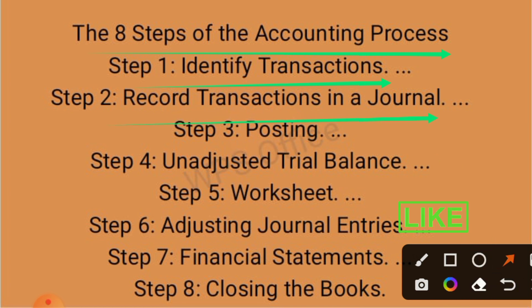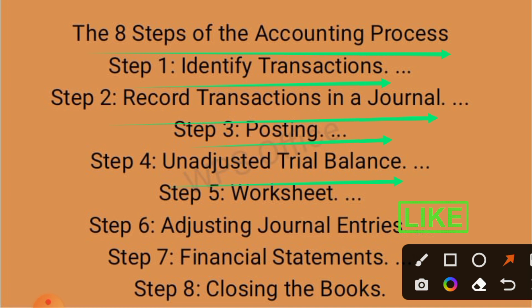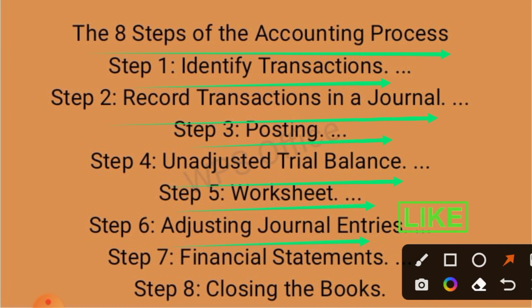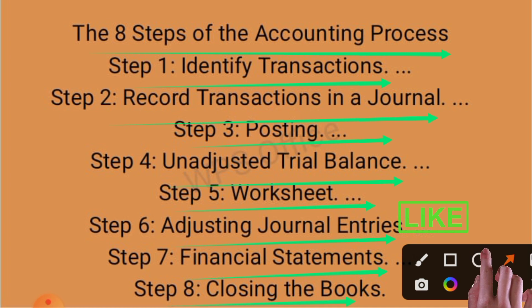3rd Step - Posting Ledger. 4th Step - Unadjusted Trial Balance. 5th Step - Worksheet. 6th Step - Adjusting Journal Entries. 7th Step - Financial Statement. 8th Step - Closing the Books.